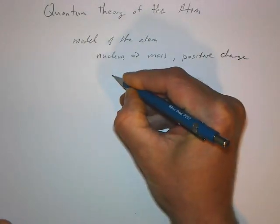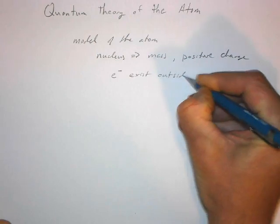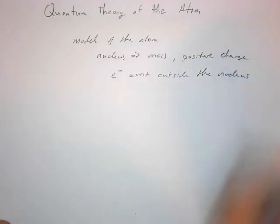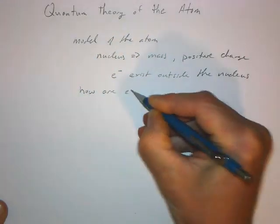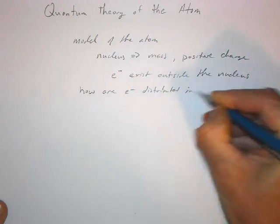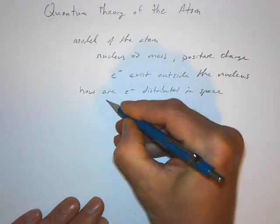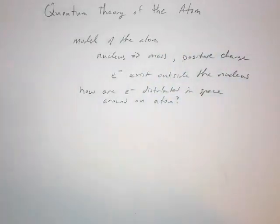The other parts of the atom, including the electrons, electrons exist outside the nucleus. And our real question with this chapter, something to keep in mind about what we're trying to answer, is how are electrons distributed in space? Distributed in space around an atom.